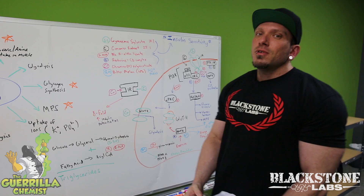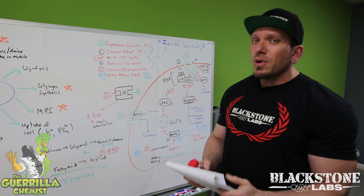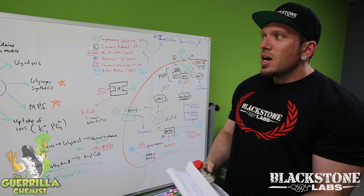Welcome back to another episode of Behind the Muscle with me, the Gorilla Chemist, Chief Science Officer here at Blackstone Labs. Today we are going to talk about a product that I'm super excited about — it's called Glycolog, and it is a nutrient partitioning product. If you don't know what that is, I'm going to explain it to you throughout this video.